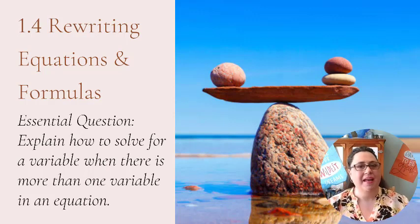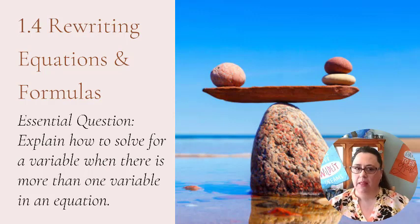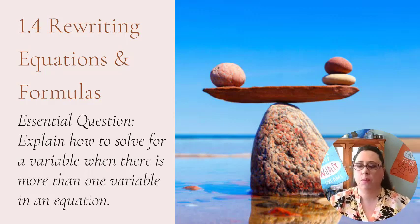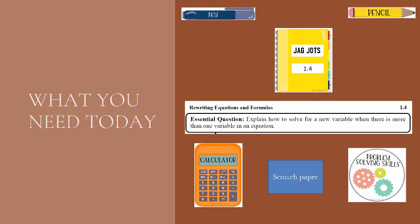Hi and welcome to Meetings in Math. You are here for section 1.4, Rewriting Equations and Formulas. Our essential question for today is: explain how to solve for a variable when there is more than one variable in an equation. Today you will need your jaguar dots on section 1.4, something to write with, a calculator, a piece of scratch paper, and your problem-solving skills.